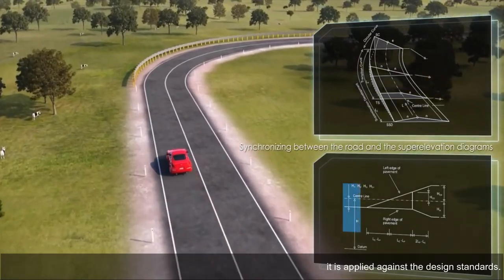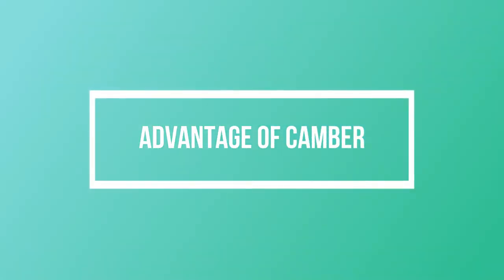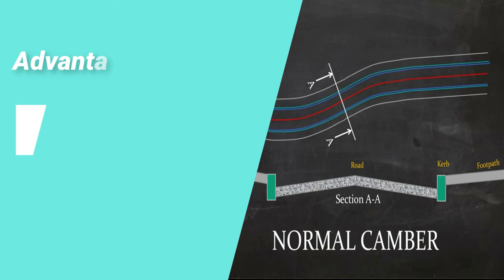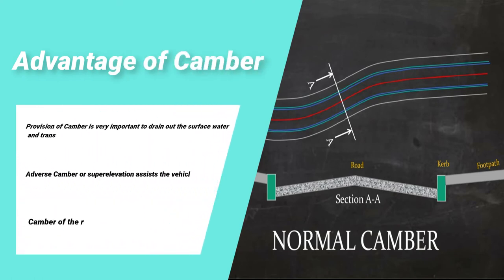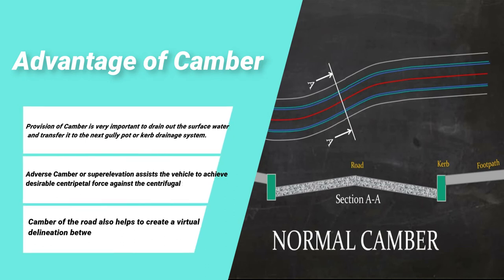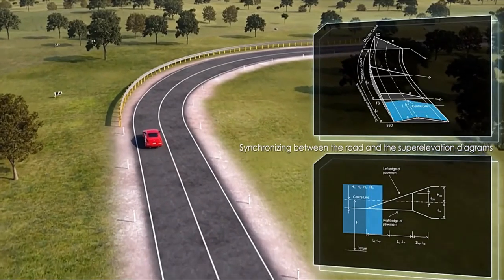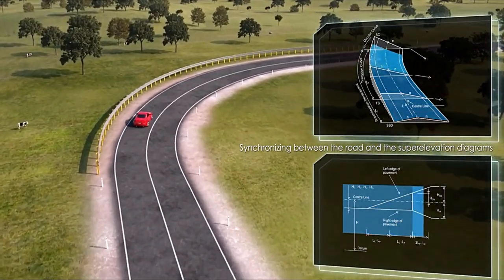The advantage of camber: provision of camber is very important to drain out surface water and transfer it to the next gully pot or curb drainage system. Adverse camber or super elevation assists the vehicle to achieve the desirable centripetal force against the centrifugal force. Camber of the road also helps to create a virtual delineation between opposing traffic lanes, while the white line on top of the crown line provides a clear delineation to the drivers.